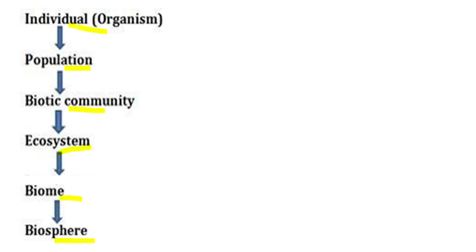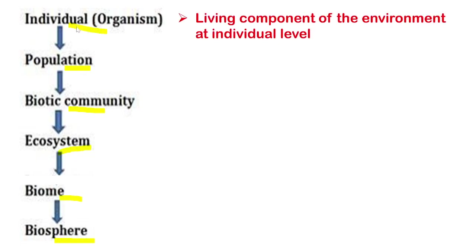An individual organism means the living component of the environment at the individual level — the single entity of life. This can be a microbe, a bacterium, a human being, a single plant such as a rose plant or grass plant — any single living component on this earth is the organism.